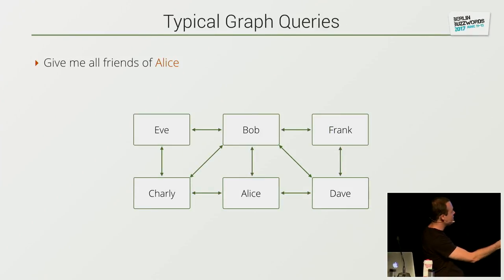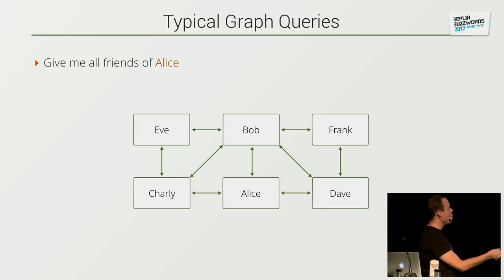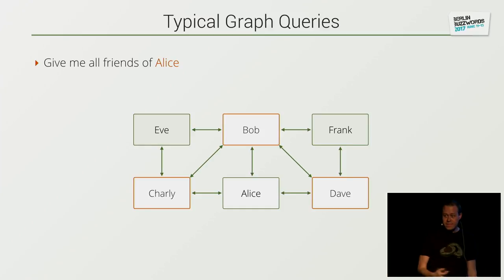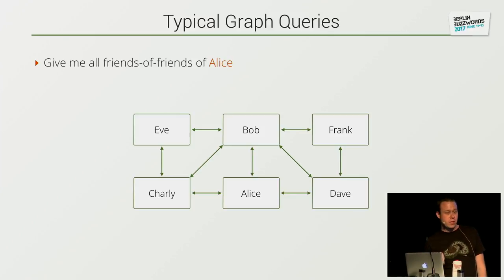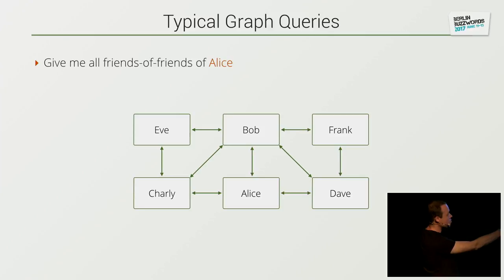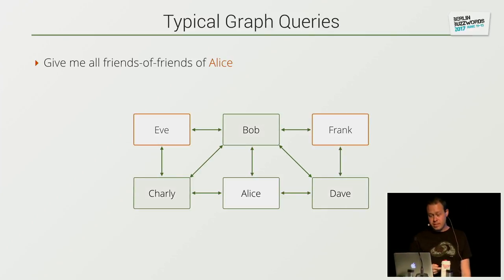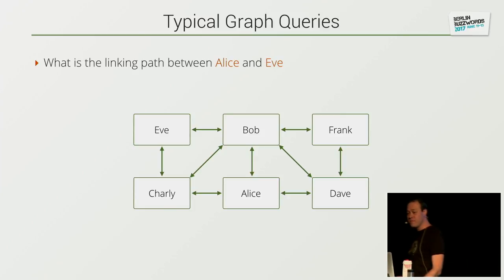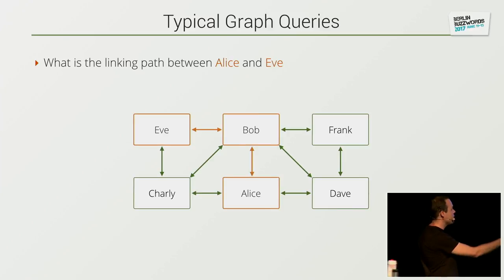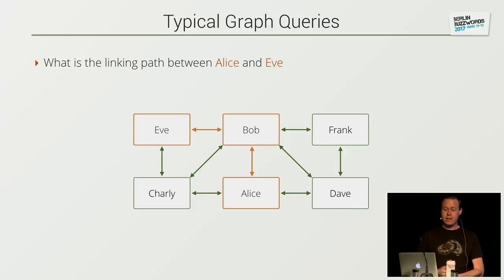So what are typical graph queries? Just to visualize: the easiest thing is please give me all friends of Alice. Alice, Bob, Charlie, Dave — they are all vertices, and we have relations between them. All the friends of Alice is just starting at Alice and going one step, so we will find Charlie, Bob, and Dave. Next thing: give me all friends of friends of Alice — those are two steps away, but they should not be on the first step. So if I start at Alice, I could go to Bob and go to Dave in two steps, but I could reach Dave already in one step. So in this dataset, only Frank and Eve would be correct results. Or I can say, I have Eve and I have Alice — please give me the connection, and it will find a path between them.